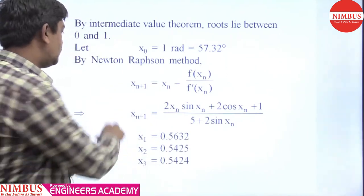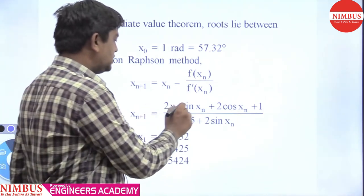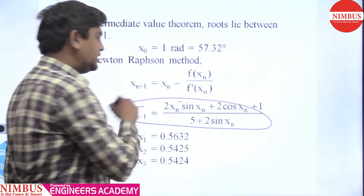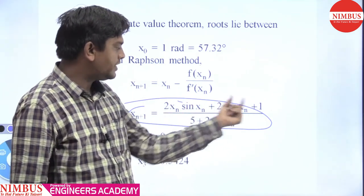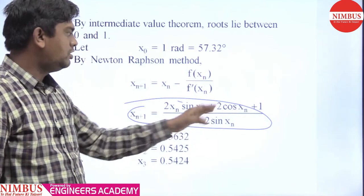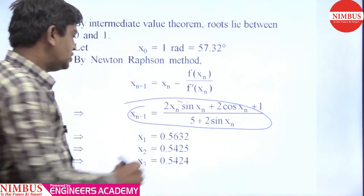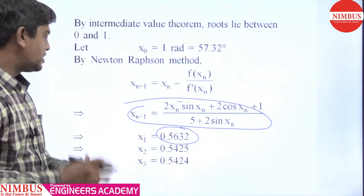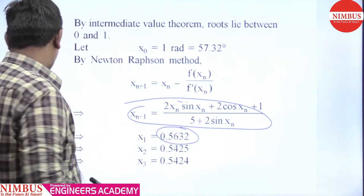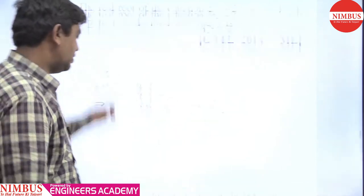If I get x₁, where n = 0, I have to put 0. So here I will get (2·x₀·sin(x₀) + 2cos(x₀))/(5 + 2sin(x₀)). x₀ value is 1. So if I put the value, I get 0.5632. Now what do I have to do? Put this 0.5632 here in this function and see what the value is.